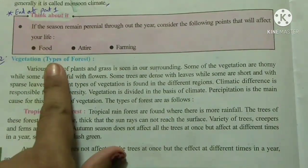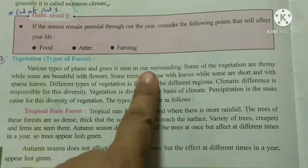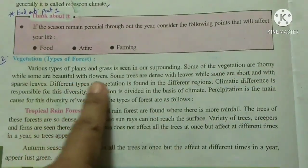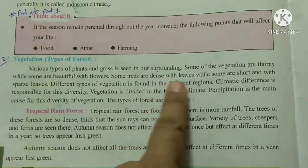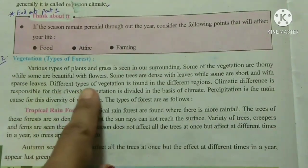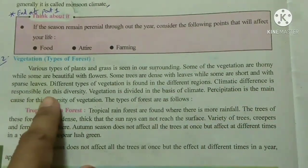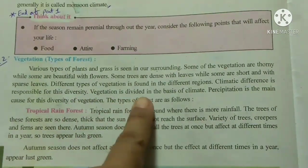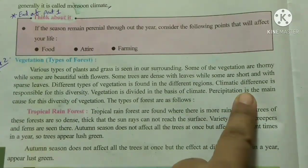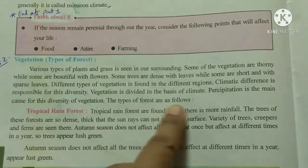By vegetation, we mean types of forest. Various types of plants and grass are seen in our surroundings. Some vegetation is thorny while some is beautiful with flowers. Some trees are dense with leaves while some are short and sparse. Different types of vegetation are found in different regions. Climatic differences — especially precipitation — are responsible for this diversity. Vegetation is classified on the basis of climate.